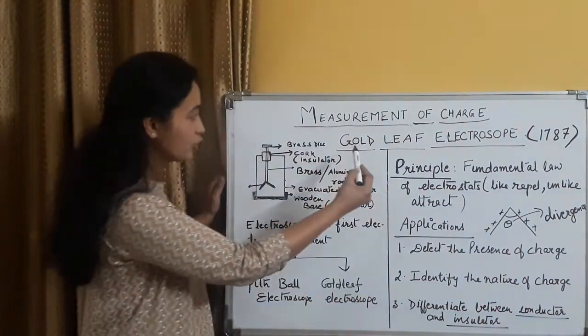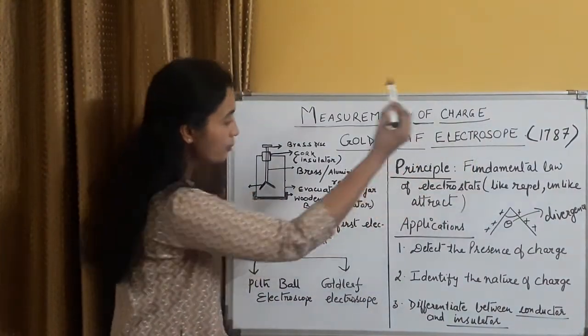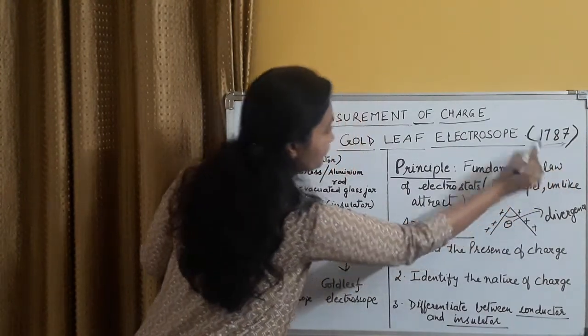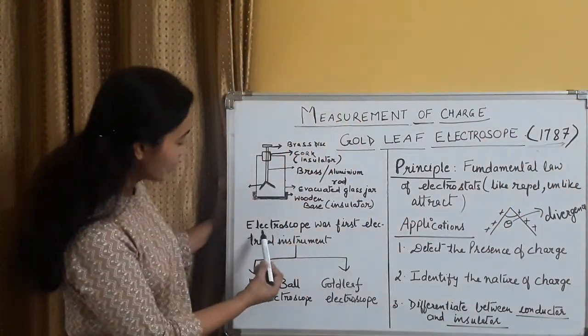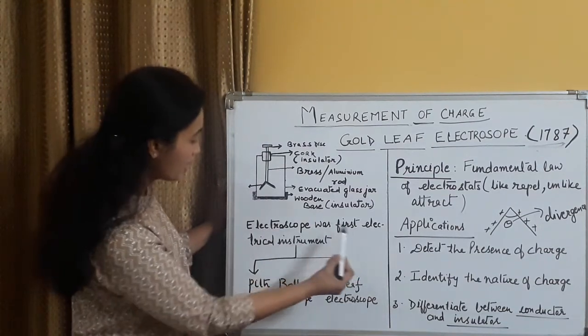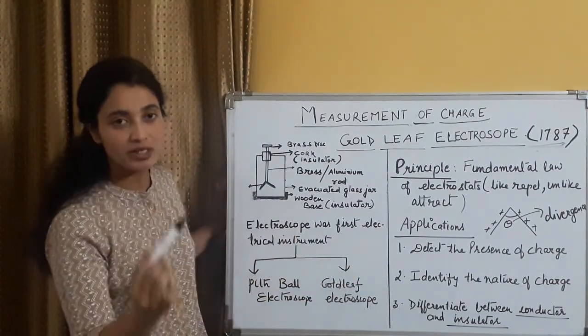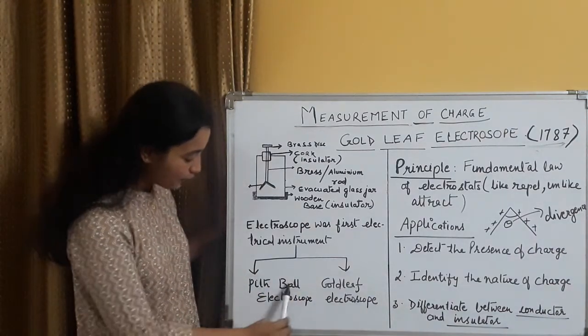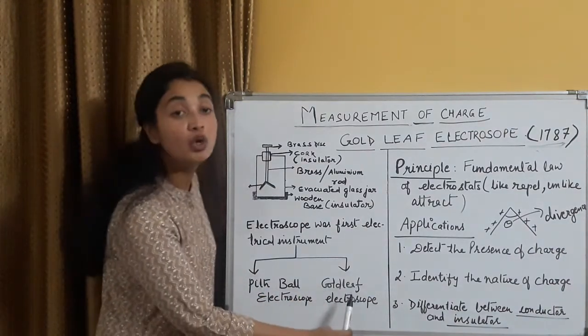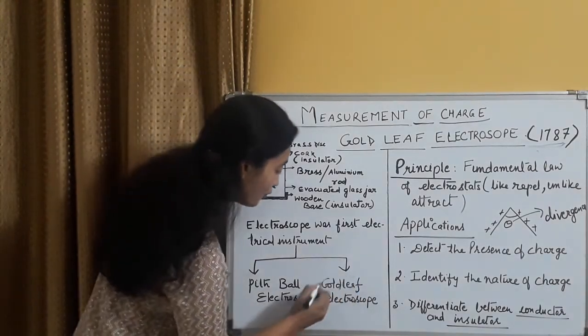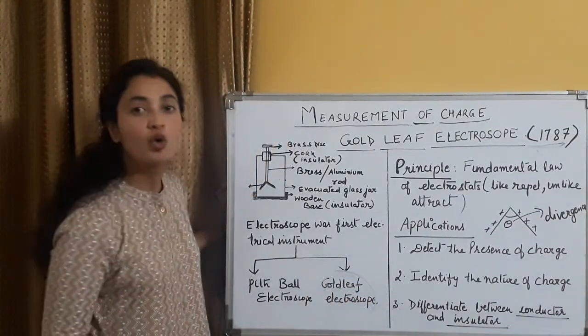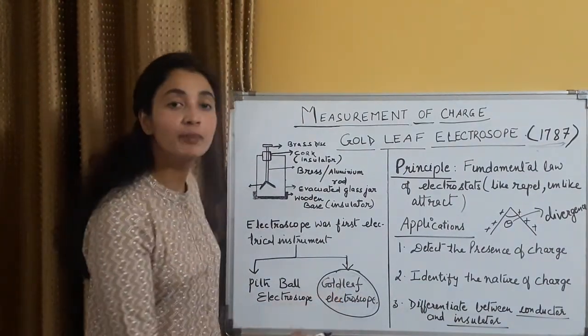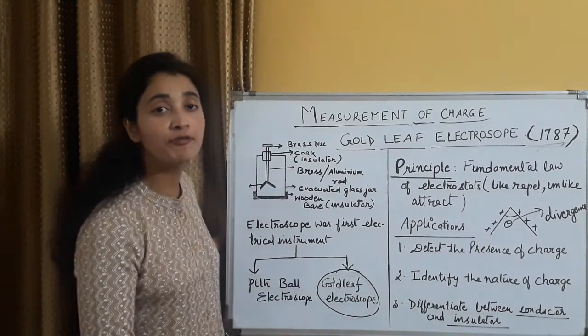I believe whatever is mentioned in NCERT, whether it's in the form of a question or in the form of reason, assertion or topic, we students who are preparing for CBSE must get into it in detail. So let us start with our topic, gold leaf electroscope. It was basically around the year 1787, this was discovered.